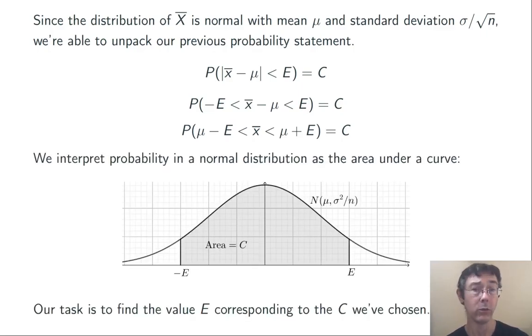So x bar, we know, has a normal distribution. We're going to interpret probability in that distribution as area under a bell curve, like I've pictured here. We want the area to be the confidence level C, in this case, 95%.